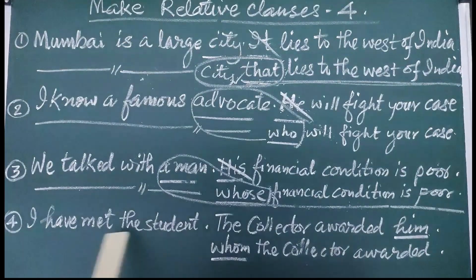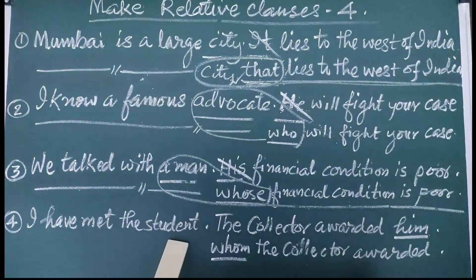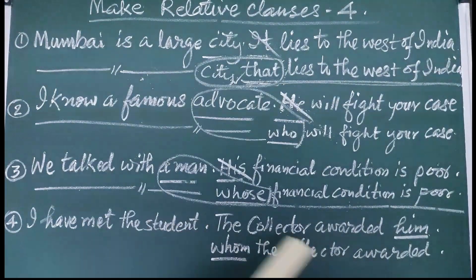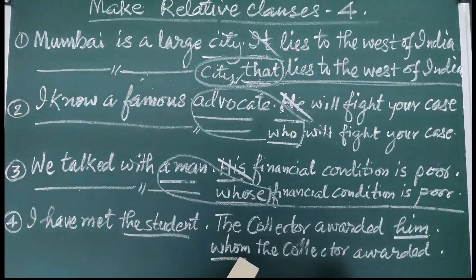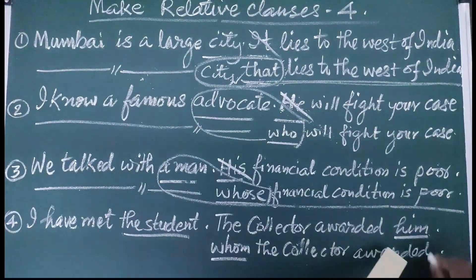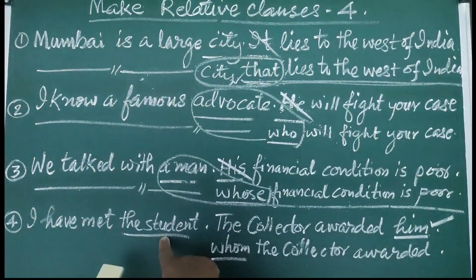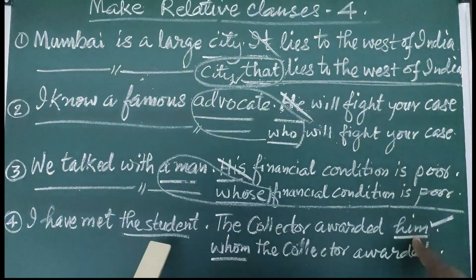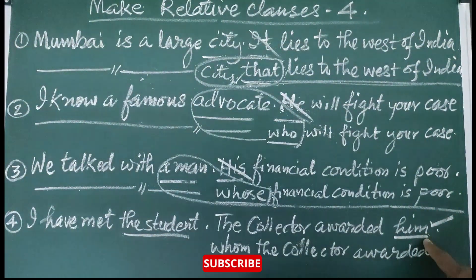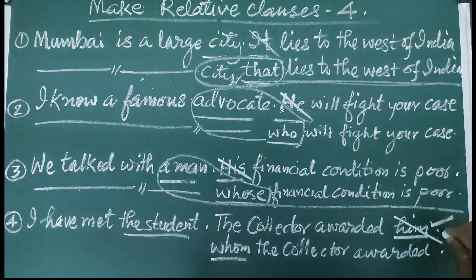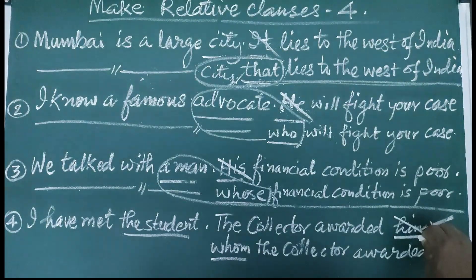Now let us see one more sentence. 'I have met the student. The collector awarded him.' Here the mention is about the student. Students may misunderstand that the mention is about 'I' — but no, if 'I' were the reference, it should be repeated in the second sentence. The noun is 'the student' and its equivalent pronoun is 'him'. The student is the noun and 'him' is the pronoun — this is the object form. Him is also from the family of persons, for which we use 'who', 'whose', or 'whom'. We will delete 'him'.